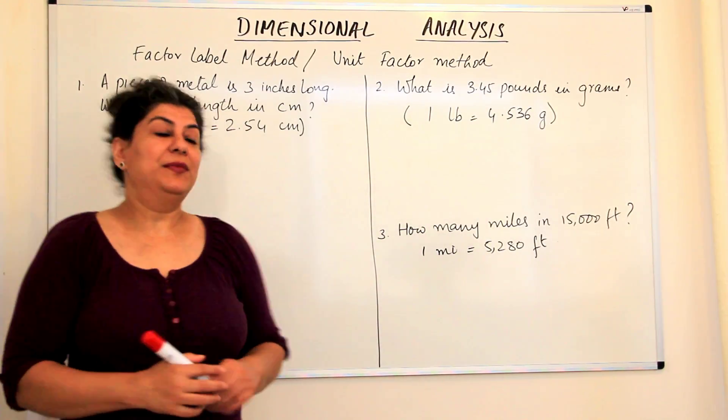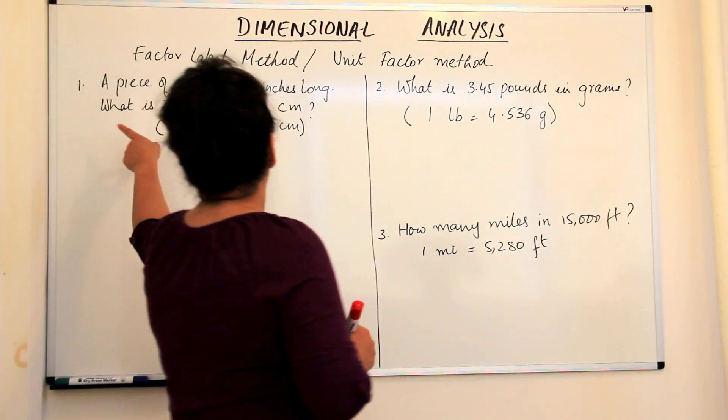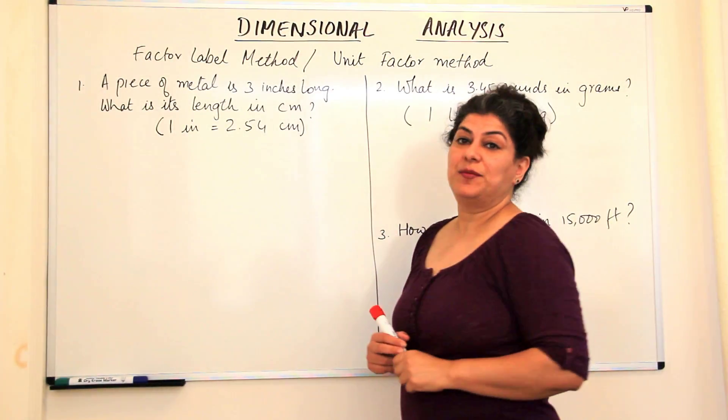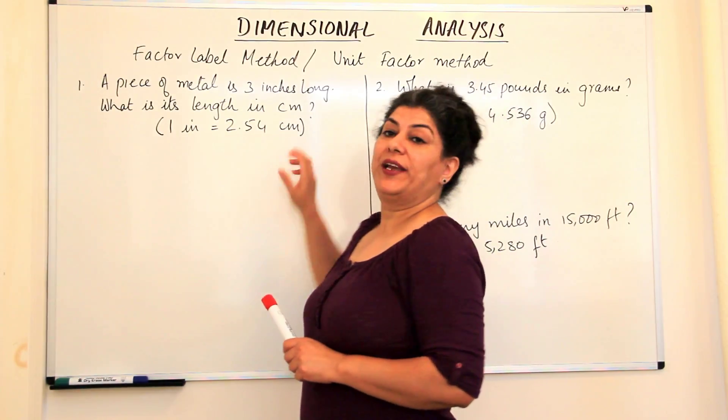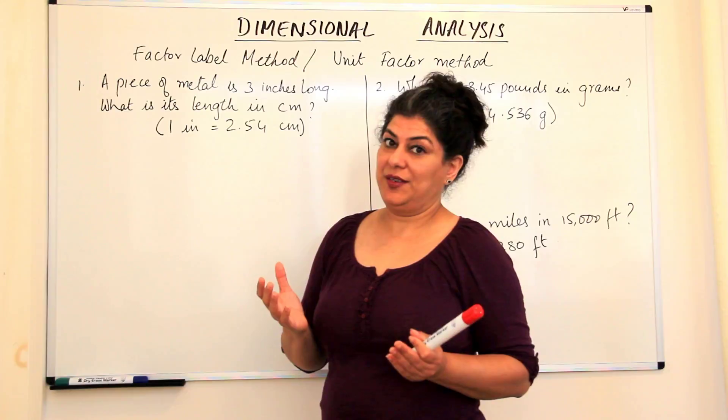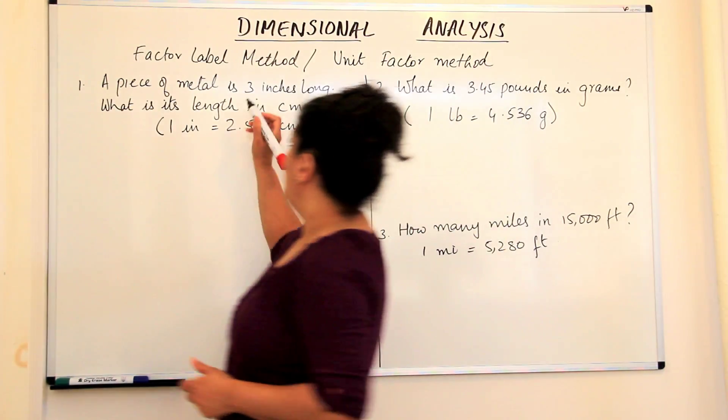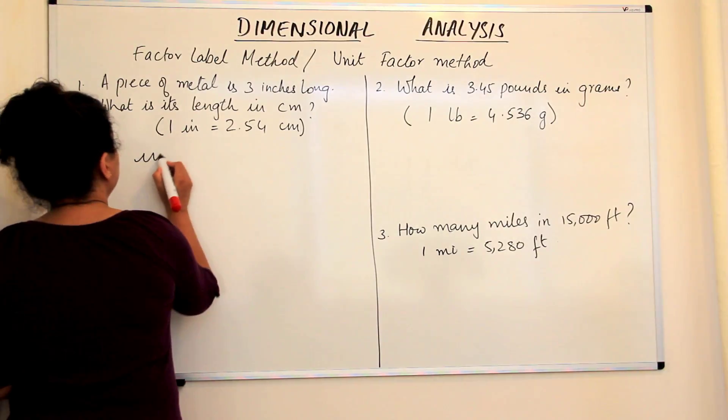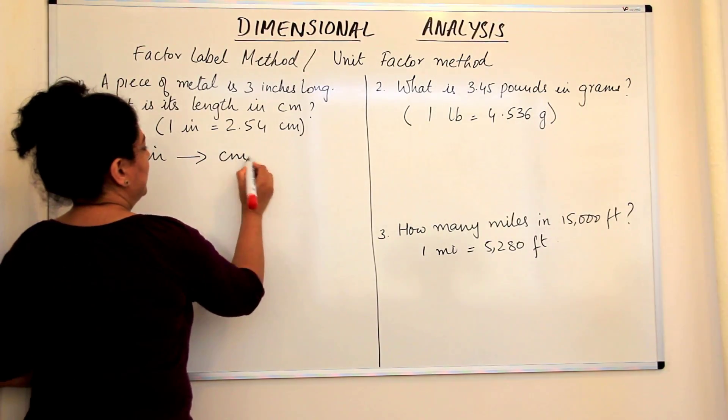Here's a problem: we have a piece of metal which is three inches long and what is its length in centimeters? We know that one inch is 2.54 centimeters. In this method, what is it that we want to do? We have inches and we want to convert inches to centimeters. That's the aim.